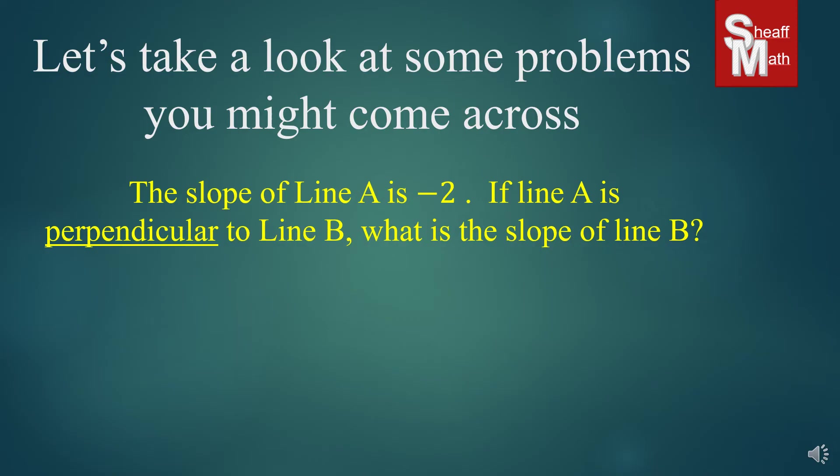This one says the slope of line A is negative 2. If line A is perpendicular to line B, what is the slope of line B? We want to find the opposite reciprocal of negative 2, so it's going to be positive. That 2, which is 2/1, flips to 1/2, and we get positive 1/2.